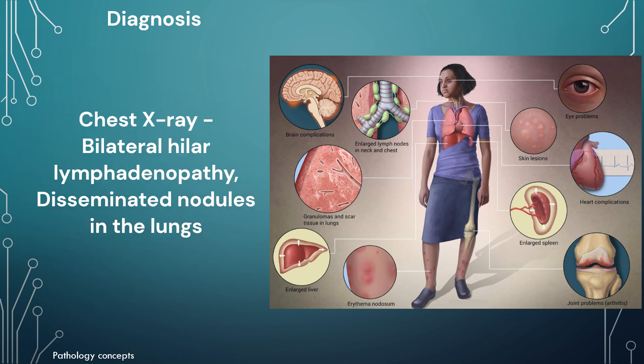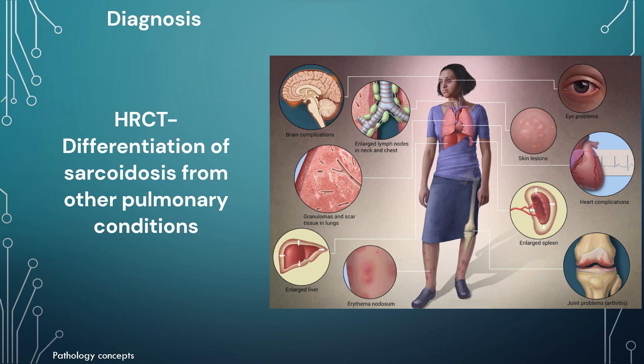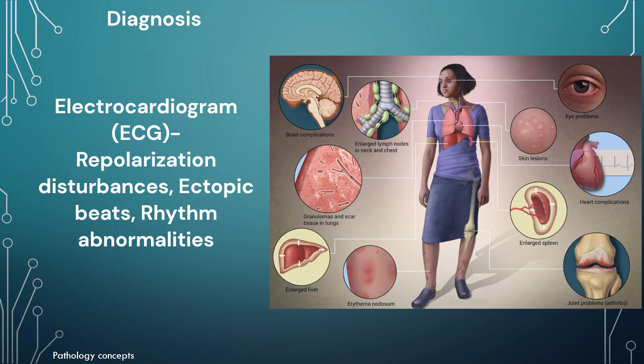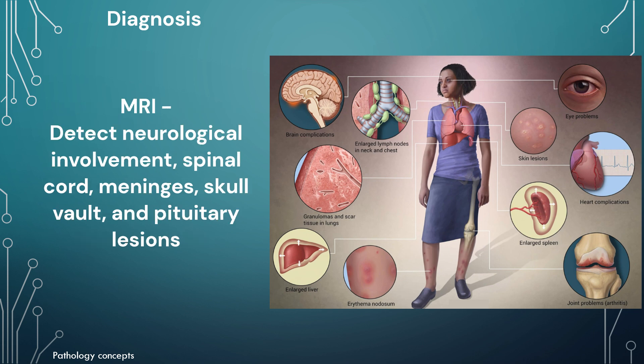Chest X-ray is used for bilateral hilar lymphadenopathy and disseminated nodules in the lung. On HRCT, differentiation of sarcoidosis from other pulmonary conditions is possible. FDG-PET is useful because it is highly sensitive for detecting cardiac and pulmonary involvement. ECG shows repolarization disturbances, ectopic beats, and rhythm abnormalities. MRI is useful for detecting neurological involvement, spinal cord changes, skull vault, and pituitary lesions.